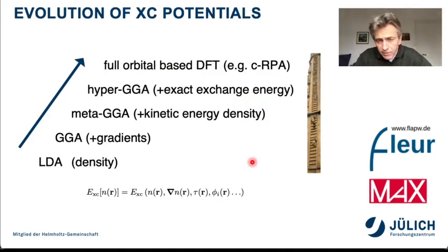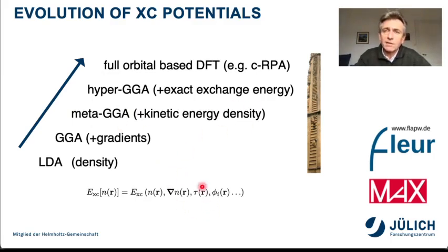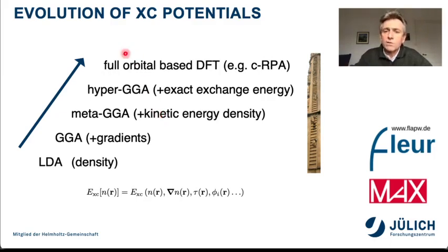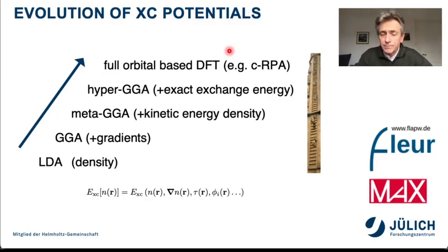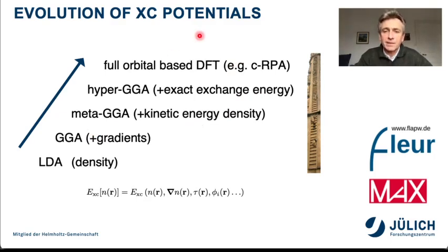Developments didn't stop at GGAs. In the meta-GGA, the kinetic energy density was added as additional input. Hyper-GGAs were constructed where exact Hartree-Fock-like exchange energy was added. This leads to orbital-based DFT, which gives the best accuracy results though at rather high computational cost. This development is sometimes called Jacob's ladder to chemical accuracy — things get better and better as more input is given to the exchange-correlation potential.